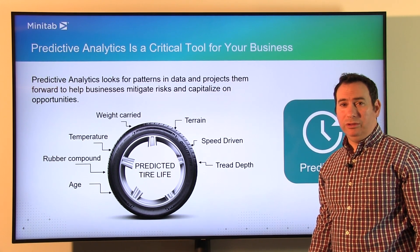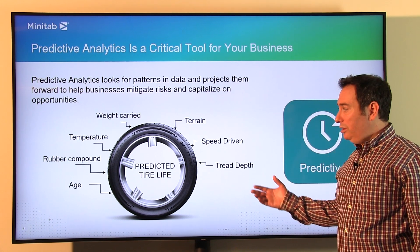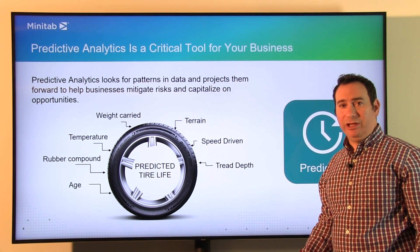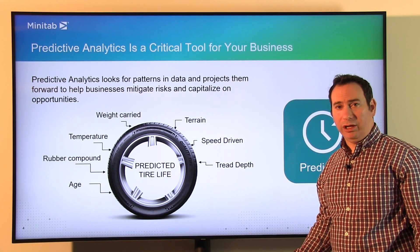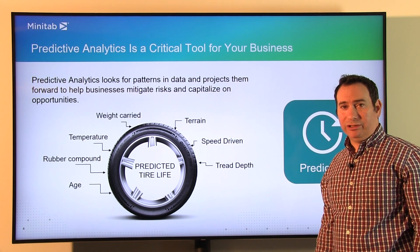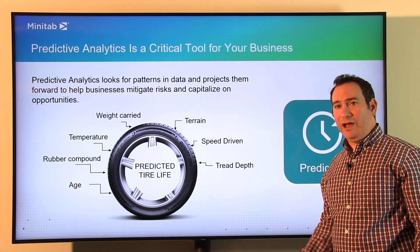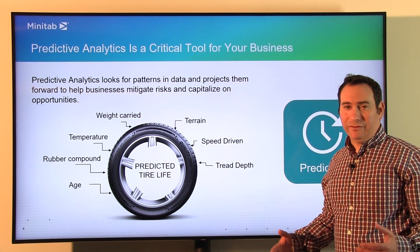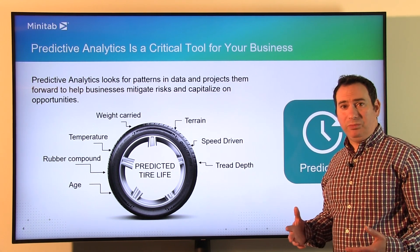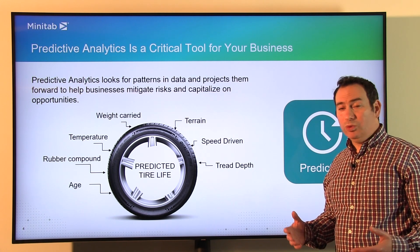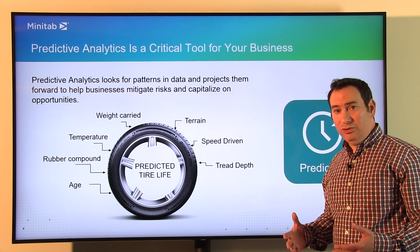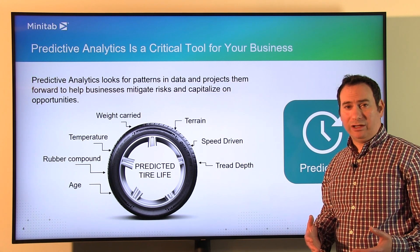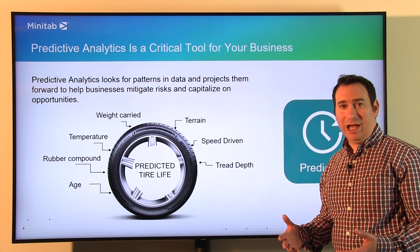Predictive analytics can be a critical tool in your business. Here's an example of somebody looking at tire life or predicted tire life. If somebody was tasked with understanding what makes a tire wear down over time, there might be obvious answers like how long the tire was used or how fast people drove on it. But there are other factors like temperature, weather, or weight carried — that's a lot of different factors jumbled together. With predictive analytics, you can use the data to drive an algorithm that tells you the most important factors, and frankly what other factors you may think matter actually don't.